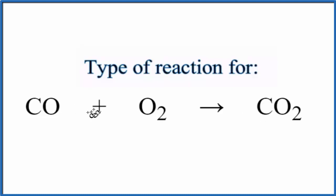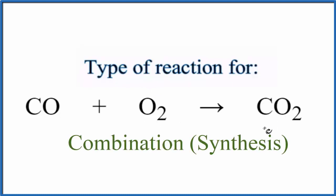You can see from the reaction that there are two reactants. We have our CO plus our O2, and those two reactants join together to form a new substance, this carbon dioxide. So whenever we have two things coming together into one, we call this a combination reaction.